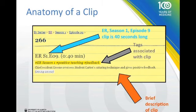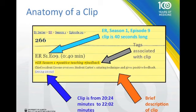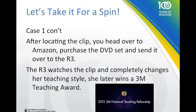Next, we have a brief description of the clip, so even if you run out of time and don't get to preview it, you can still know what it's all about. Lastly, we have information about where the clip can be found in your DVD, so you can quickly skip to 20:24 without going through the whole episode. So what you do after you've located the clip is head over to Amazon, purchase the DVD set, and send it to the R3. The R3 watches the clip, changes her teaching style, and later comes to win a 3M teaching award.